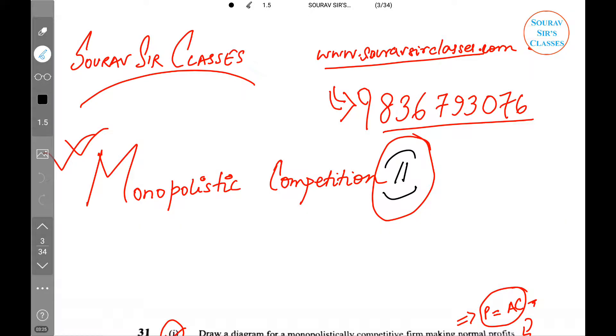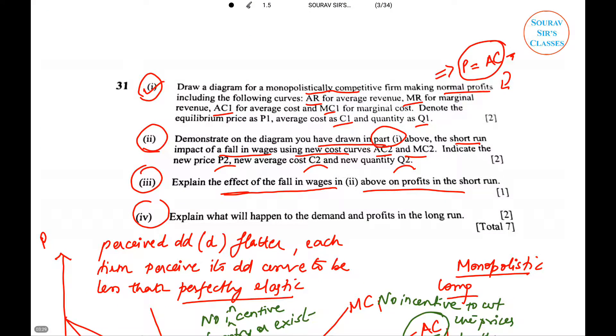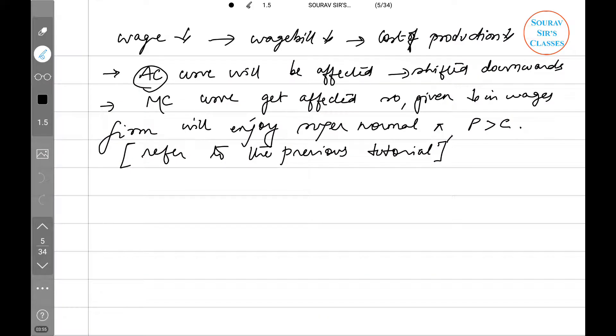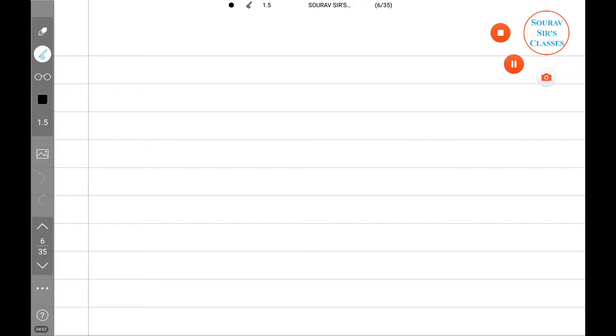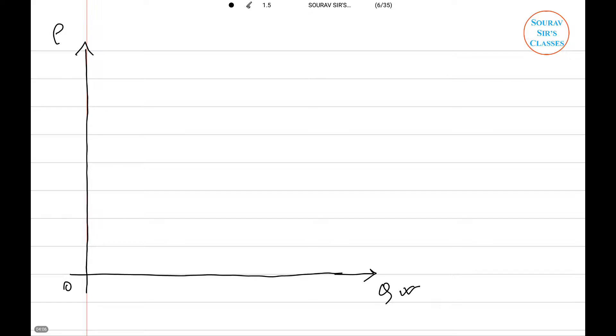The previous tutorial has the explanation and diagram. Now the last question is asking us to explain what will happen to the demand and profits in the long run. This is the key word. In the short run we have seen there can be supernormal profits. Now let's see the long run. Let me insert one more page.